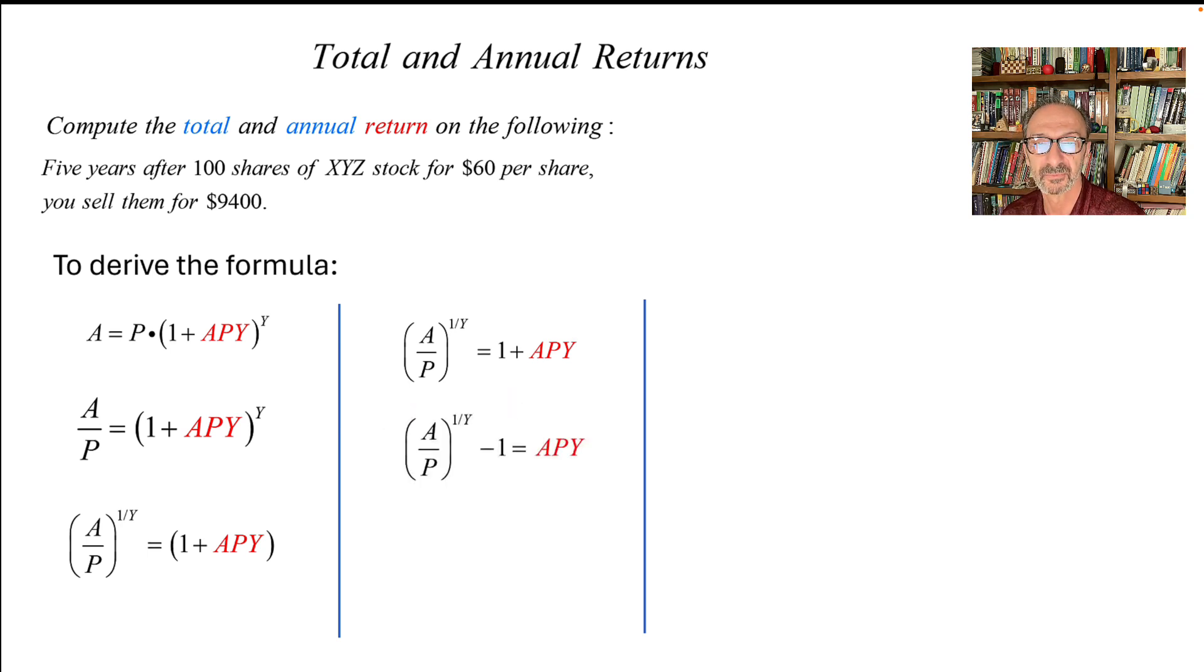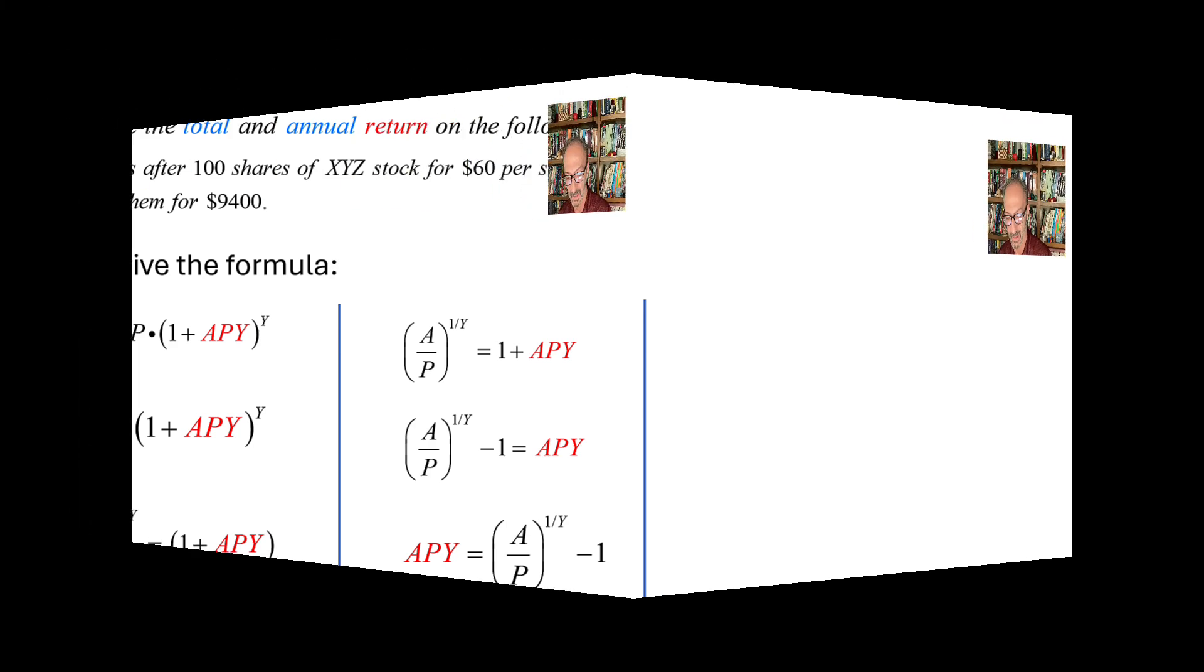Now we're going to subtract one from both sides. And when we do that, we get the following: let's rearrange it and start with APY on the left, and that's the formula now.